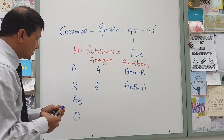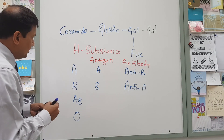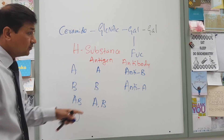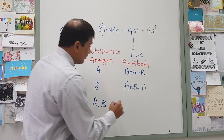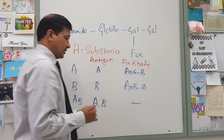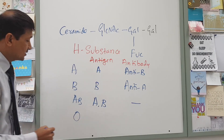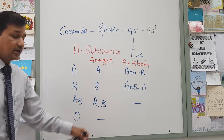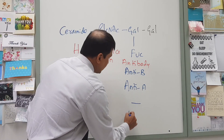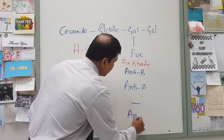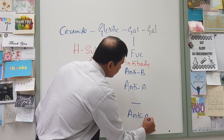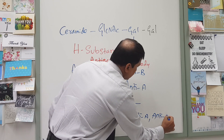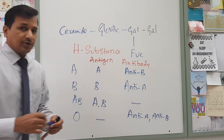So to summarize all four blood groups: A blood group person has antigen A and anti-B antibody. B blood group person has antigen B and anti-A antibody. AB person has both antigen A and antigen B, and they do not have any antibodies. O person does not have antigen A or antigen B, but they will have both anti-A antibody and anti-B antibody.